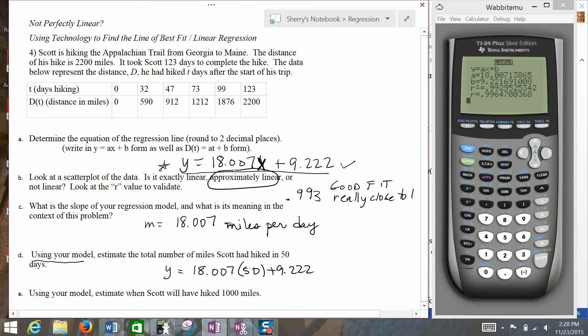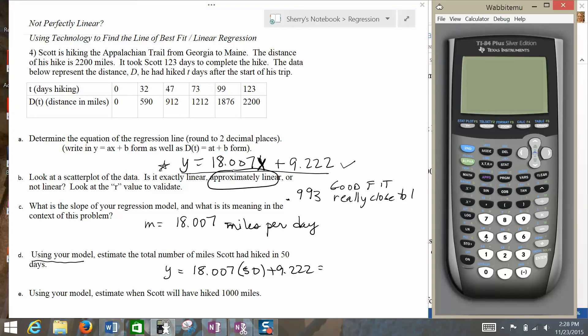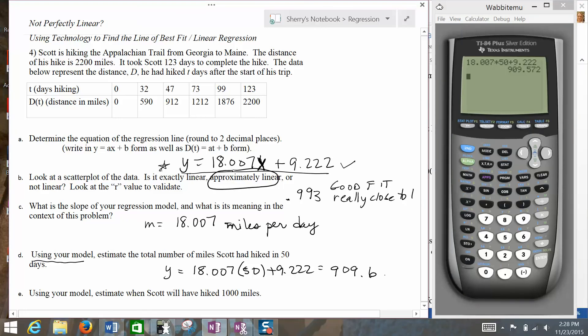And now, because I can just plug that in in my calculator and see what I get. So I can come over here and do 18.007 times 50 plus 9.222, hit enter, and I get 909.6. And so we'd expect after 50 days he should be pretty close to that.